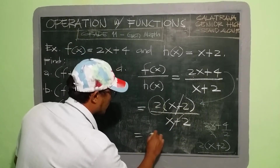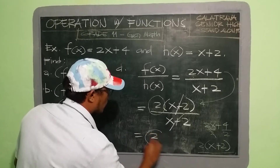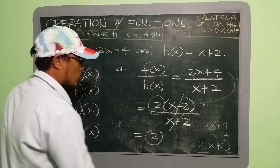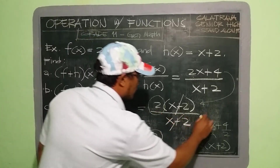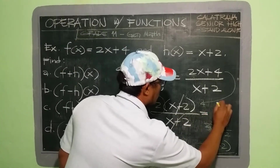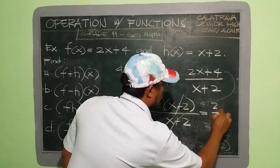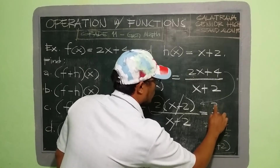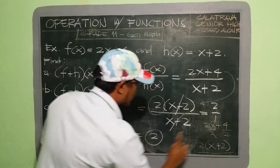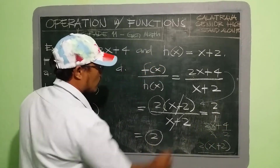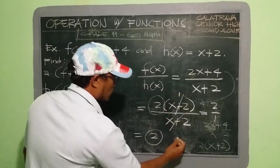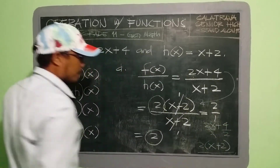What remains is 2. Therefore, our answer is 2, since 2 over 1 equals 2.